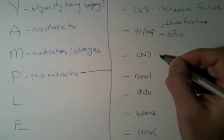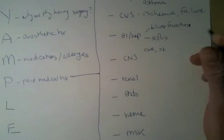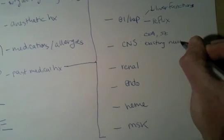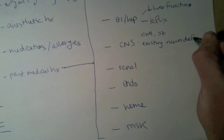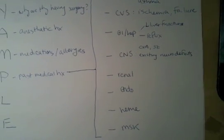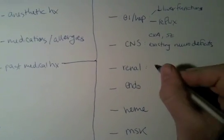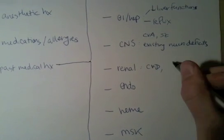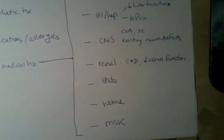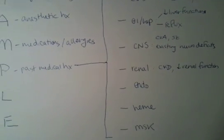For the central nervous system, you want to know about a history of stroke or seizures, or any pre-existing neurological deficits. For example, if you wanted to place a spinal anesthetic, you want to know if they have any existing distal neuropathies. For renal function, you want to know about a history of chronic kidney disease or any other form of decreased renal function, because the kidney is very important in the excretion and elimination of many of the drugs that we give.